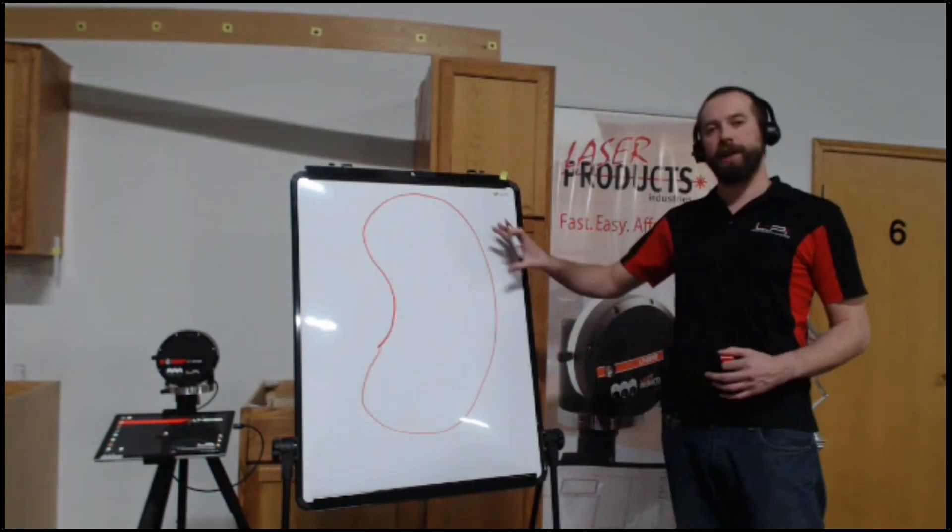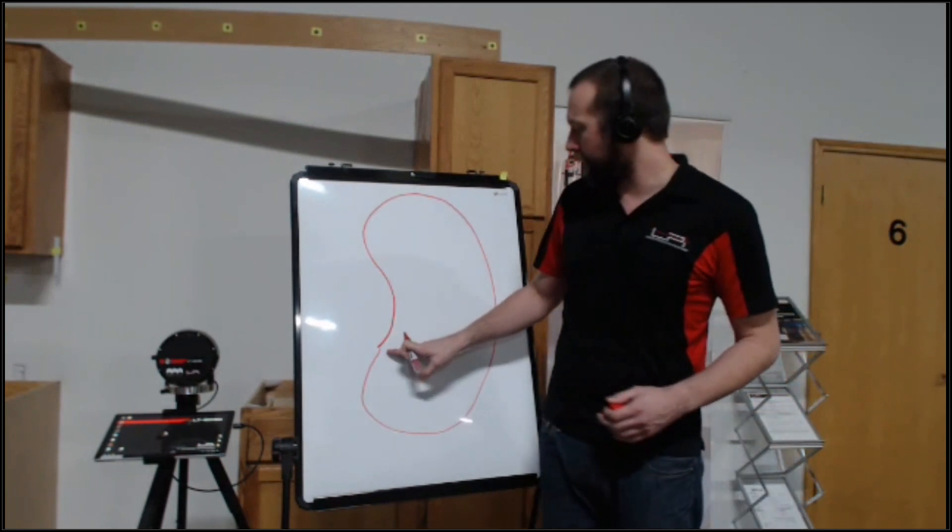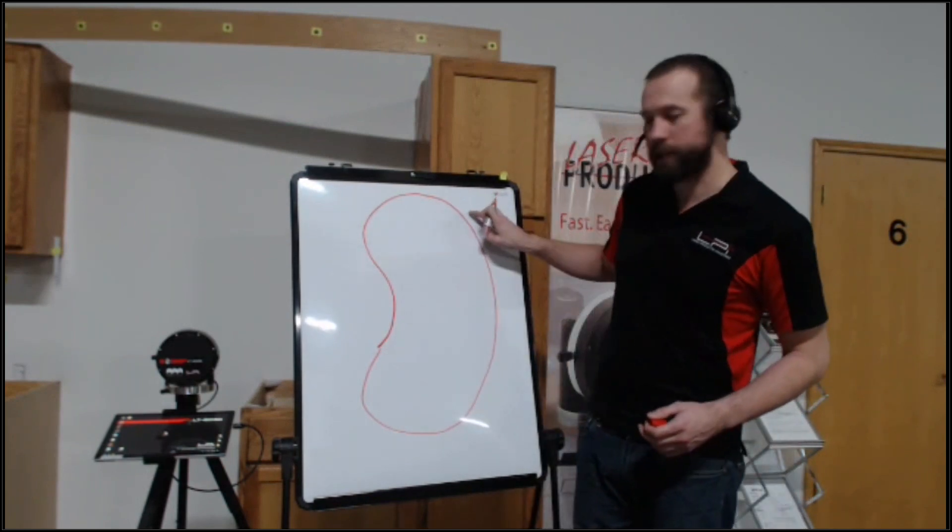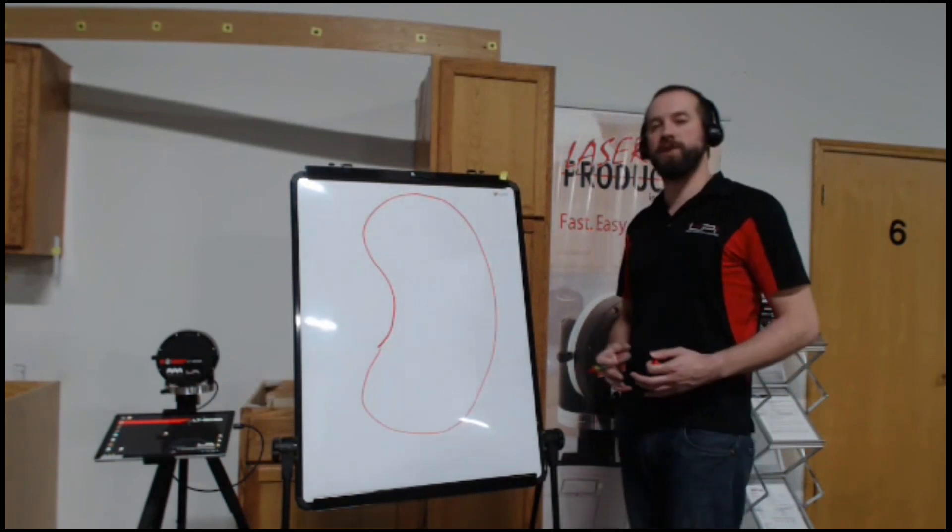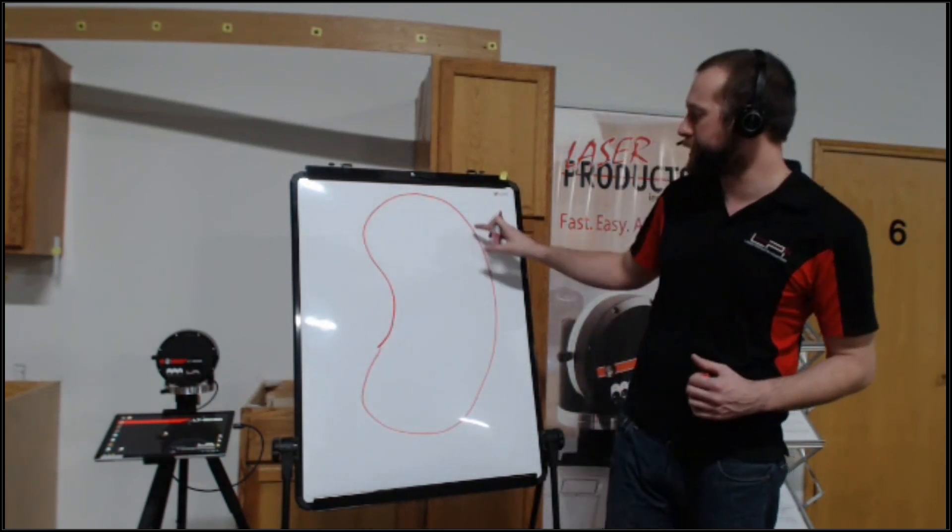What we want to do if we have a shape like this that has multiple arcs is we want to kind of mark out where each of those arcs is going to begin and end. We call those our tangent points where two arcs or two radiuses come and meet together.